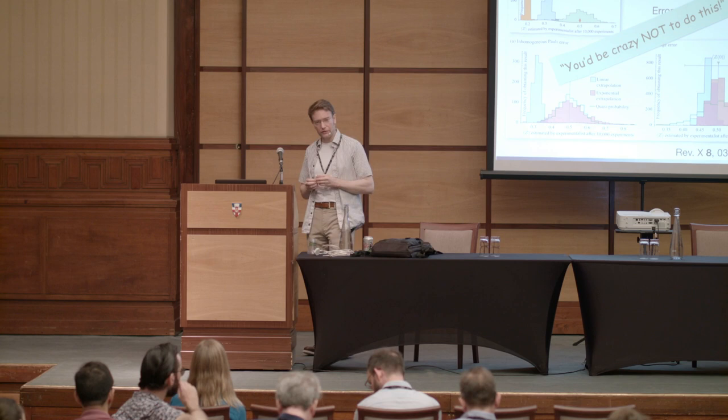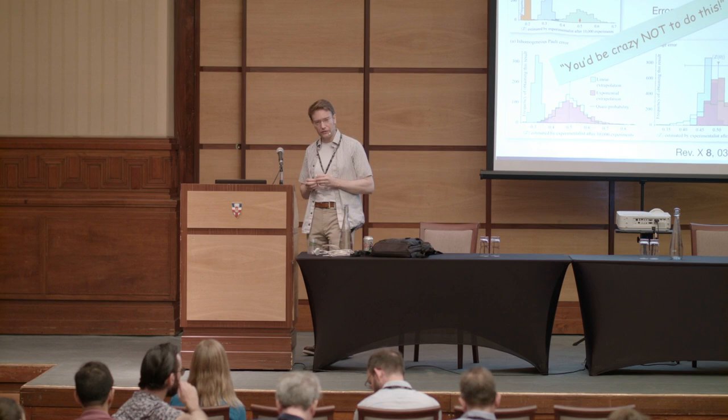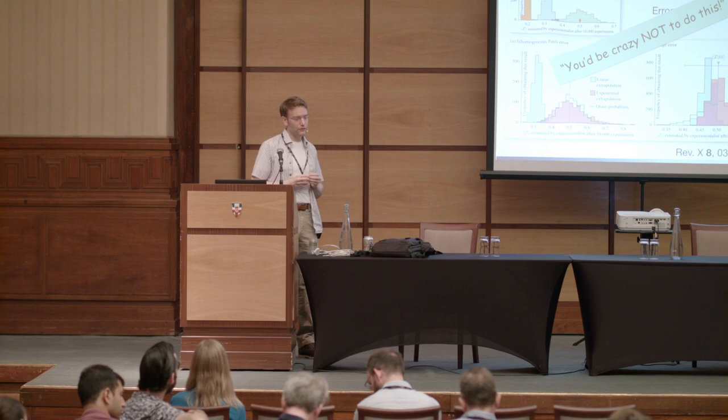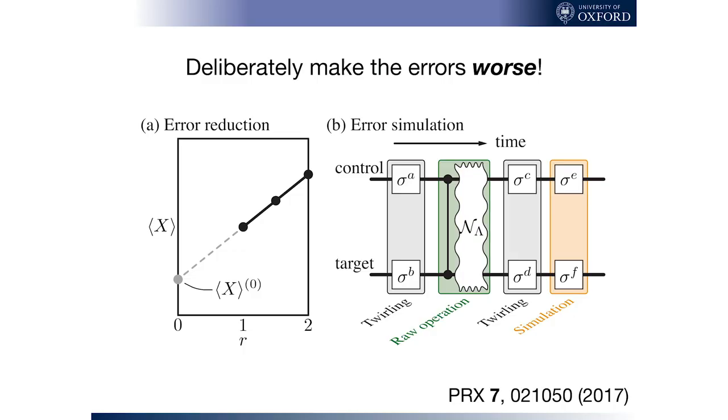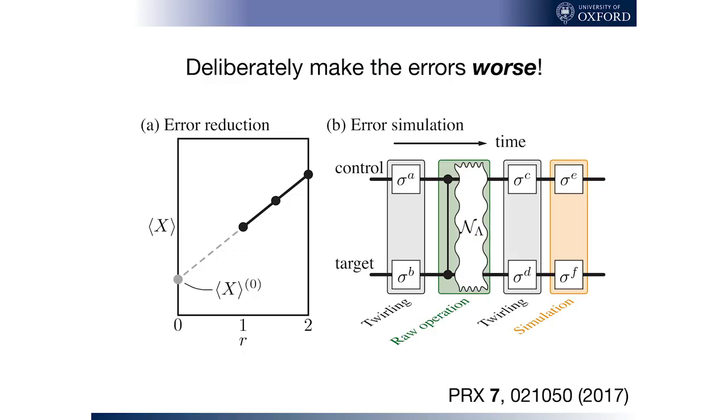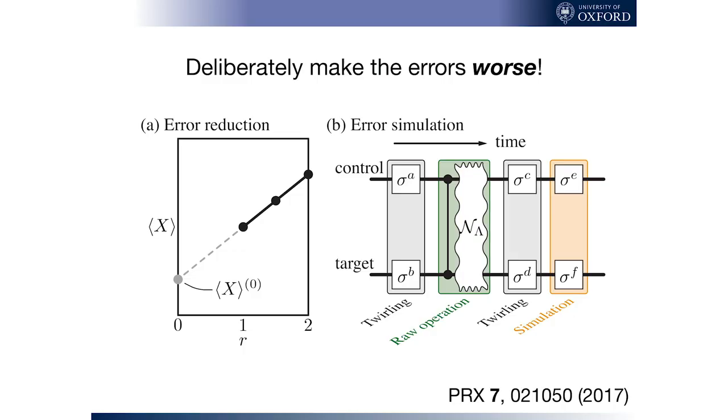So a couple of things to say about that. One, just understand your noise well enough to actually do this. And so that's not an outlandish thing to say. The groups I know who have got incredibly low error rates, like the Oxford Ion Trappers, do understand what's going on pretty well. And they may indeed be able to proportionately increase the noise in the dominant thing. But the other answer to that, more general answer, is in a slide where I said, don't look at the thing on the right. But now we will look at the thing on the right.